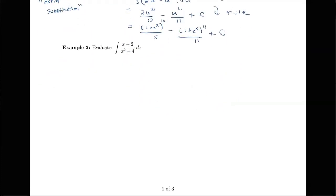In the next example, we have the integral of x plus 2 all over x squared plus 4. This is a type of integrand called a rational function, where we have a polynomial divided by a polynomial. We'll be studying integrals of rational functions later in section 8.5, but this gives us an introduction to some of the types of functions we'll see throughout chapter 8.